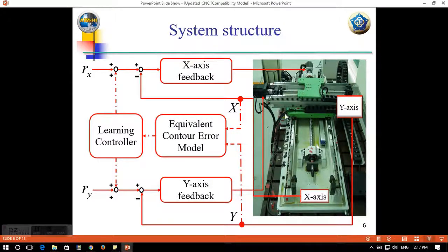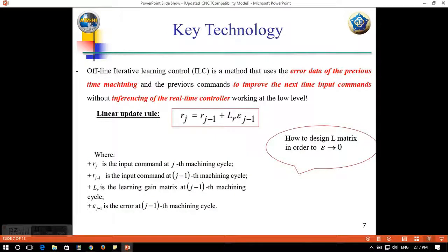And then after one machining time, we collect the data and then put it into the equivalent control error model and go through the learning controller to modify the command for the next machining time. That means our algorithm uses the offline update rule.